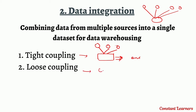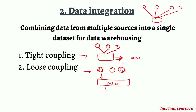In loose coupling, the data is stored in its own source database and an interface is provided to the user. Whenever the user queries the data, the output is given from that particular source database. The data is not combined or stored anywhere else — the output is given from the source database itself. That is data integration.